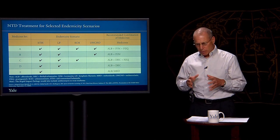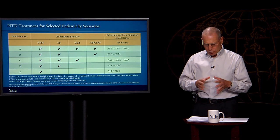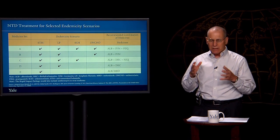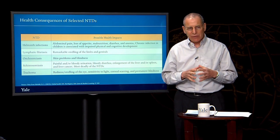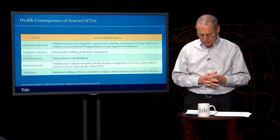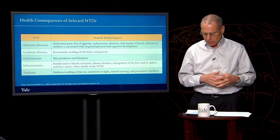A third important point is that efforts to address neglected tropical diseases have been based on important partnerships between countries, their global development partners, and pharmaceutical companies. This interesting and cost-saving model has helped enable the Rapid Impact Package to be delivered for about 50 US cents per person per year.